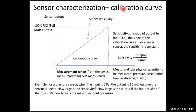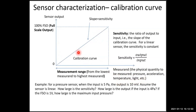Now let's look at sensor characterization. First, the calibration curve — this is the curve that describes the relationship between input and output. The horizontal axis is the measurand (the physical quantity to be measured, such as pressure, acceleration, temperature, or light intensity), and the vertical axis is the sensor output.